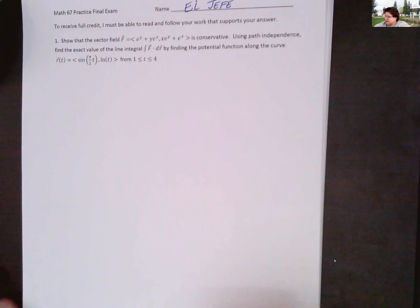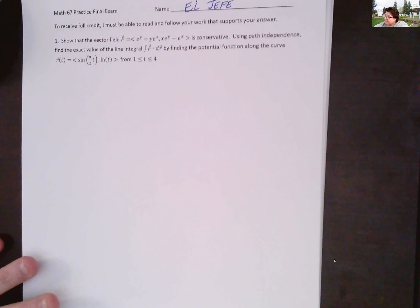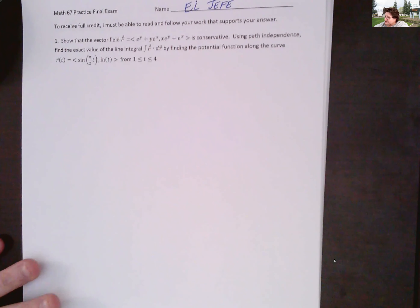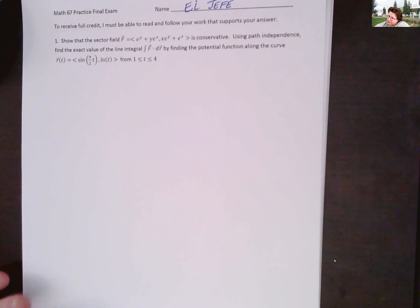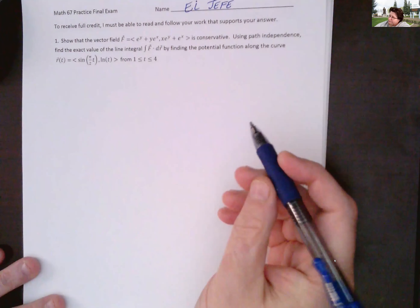In question one, we're going to show that the vector field F — which is e^y plus y·e^x for the i-component, and x·e^y plus e^x for the j-component — is conservative. Then we'll use path independence to find the exact value of the line integral of F dot dr by finding the potential function along the curve r(t) = (sin(πt/2), ln(t)), going from t = 1 to t = 4.